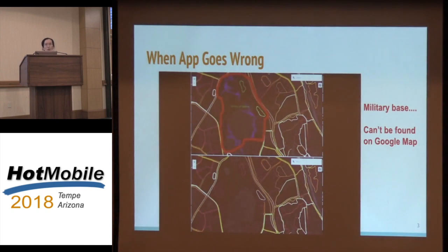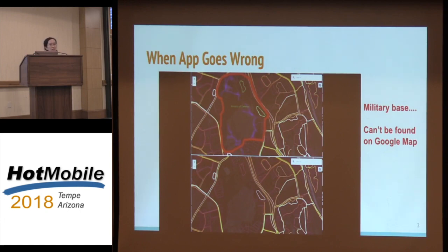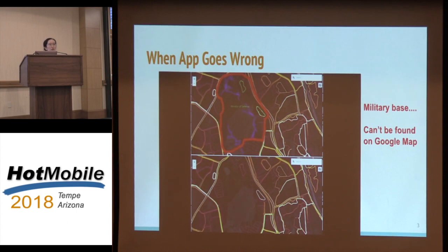It turns out, here's an example of when things can go wrong. Just a couple months ago, there was a fitness app. They figured out they wanted to apply a heat map of their users' exercise trajectories. This middle area is something that's a little sensitive. Soldiers like to work out there. This area is actually a military base. We cannot see this area on Google Maps because Google figured out it's a sensitive area and blurred it out. But now, everybody can see where the soldiers are running around every day.